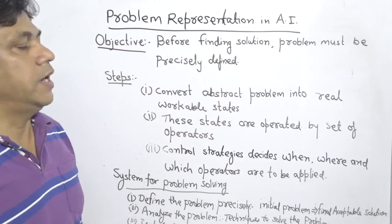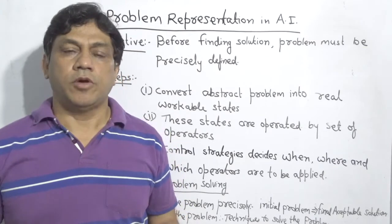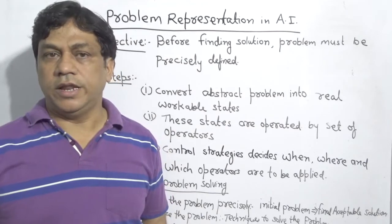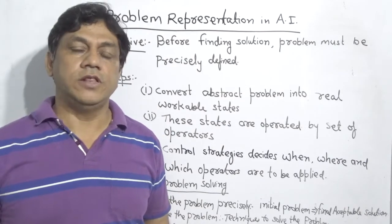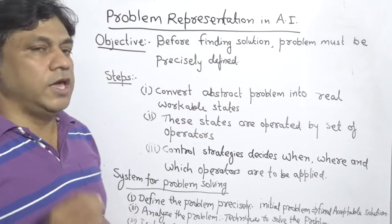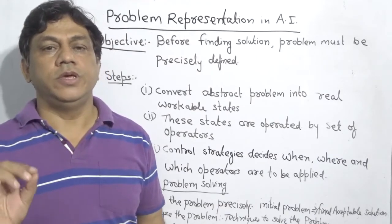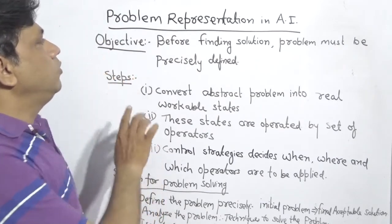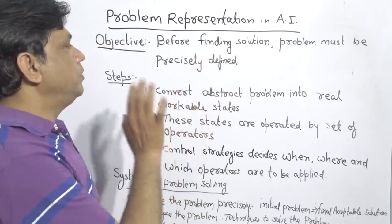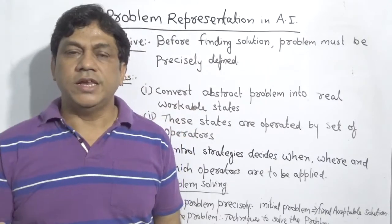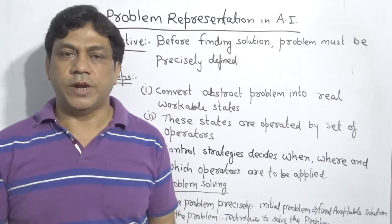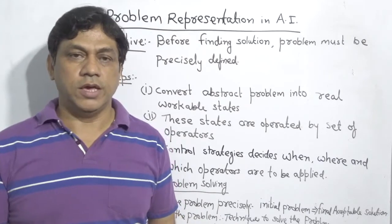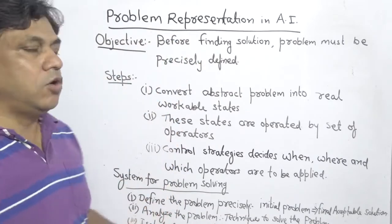Problem representation in AI — what do we mean by it? Problem representation means, suppose we have been given a problem. How does AI take this problem and solve it? For that, the problem must be represented in a way so that AI can work on it. The objective of problem representation is that before finding a solution, the problem must be precisely defined — meaning where we are standing right now and where we have to go. That path should be clearly specified.